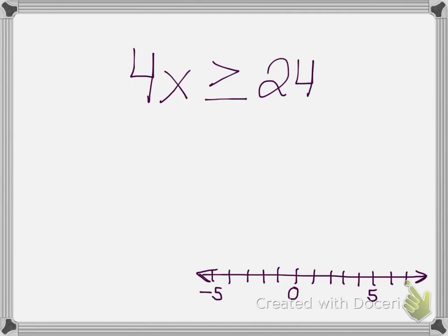Now, in problems like this, you notice that the 4 is multiplied to x. So, to get x by itself, I'm going to have to do the opposite of multiplication, which is division. So, I would divide both sides by whatever number is in front of the variable, which is a 4.